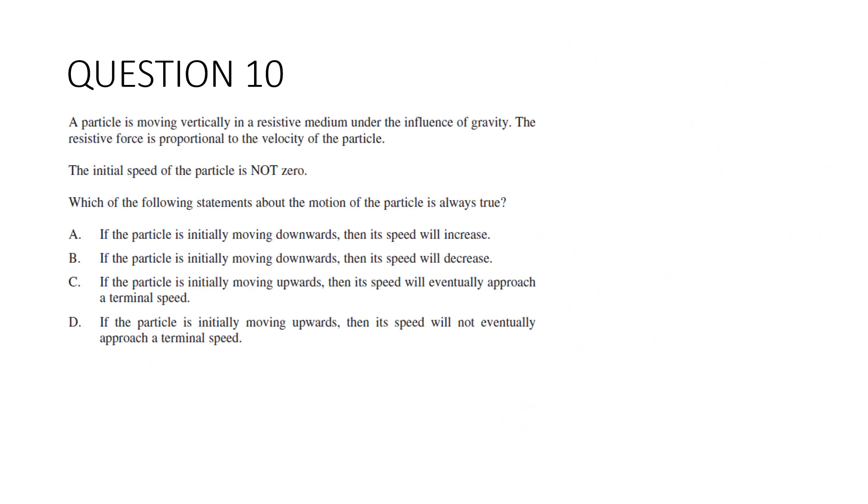Question 10. A particle is moving vertically in a resistive medium under the influence of gravity. The resistive force is proportional to the velocity of the particle. The initial speed of the particle is not zero. Which of the following statements about the motion of the particle will always be true? We've got A and B where the particle is initially moving downwards, and C and D where it is initially moving upwards.